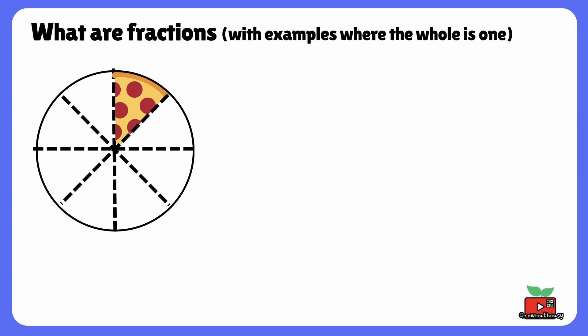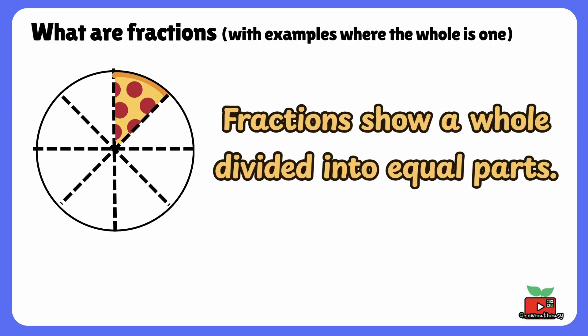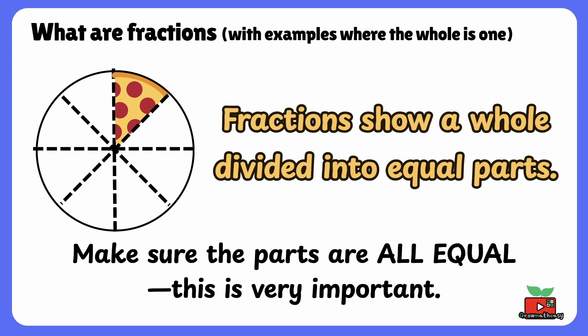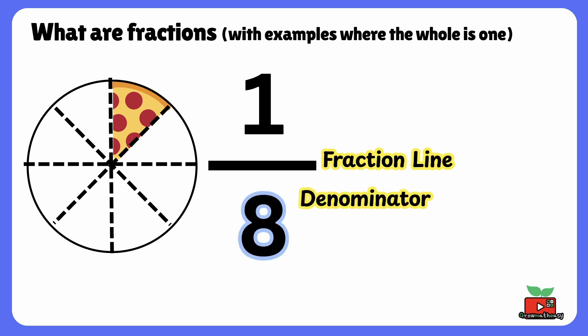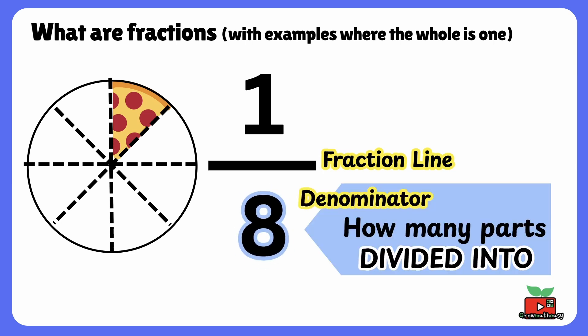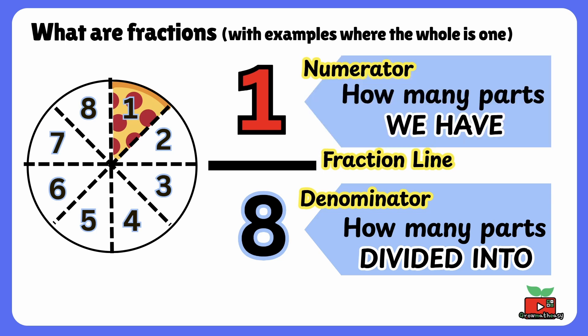So what are fractions? Fractions show us a whole that is divided into equal parts. Here's the most important rule: the parts must all be equal, otherwise it's not a proper fraction. A fraction has two numbers with a line between them — the fraction line. The bottom number is called the denominator; it tells us how many parts the whole is divided into. The whole pizza is divided into 8 equal parts. The top number is called the numerator; it tells us how many parts we have. Here, we have one part of a pizza. We can call this fraction 1 over 8, or 1 eighth.